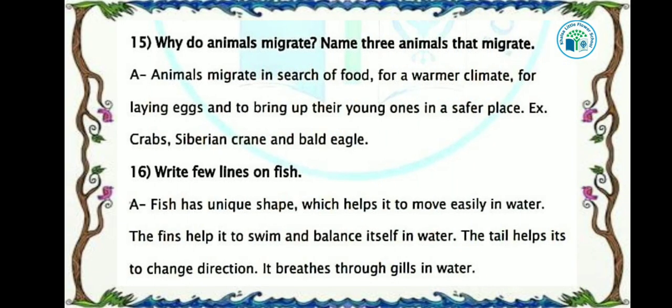Why do animals migrate? Name three animals that migrate. Animals migrate in search of food, for a warmer climate, for laying eggs, and to bring up their young ones in a safer place. For example, crabs, Siberian crane, and bald eagle.